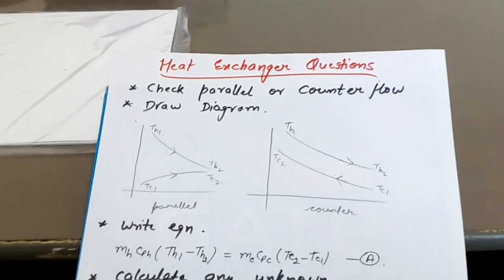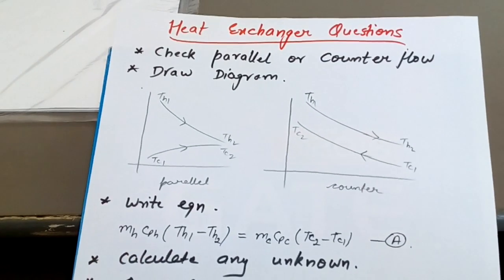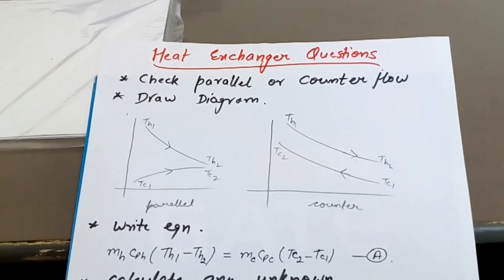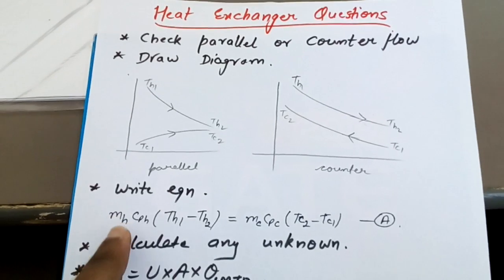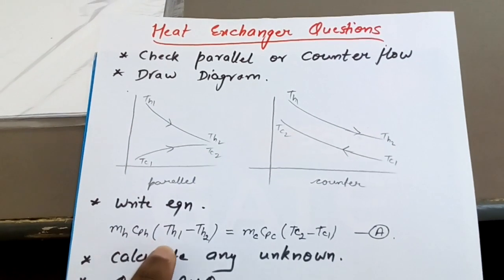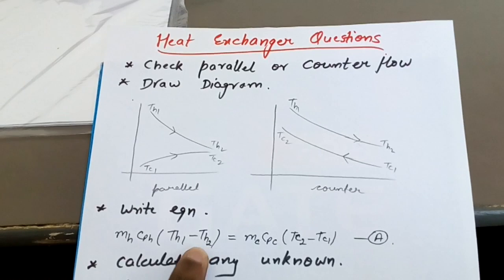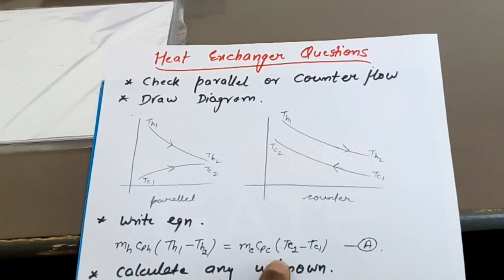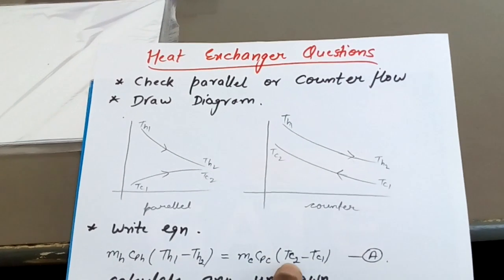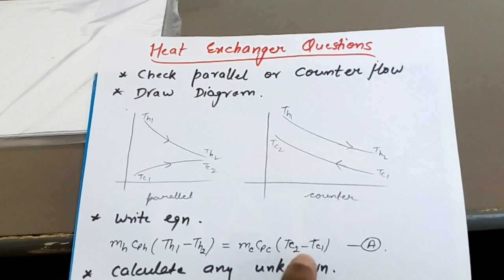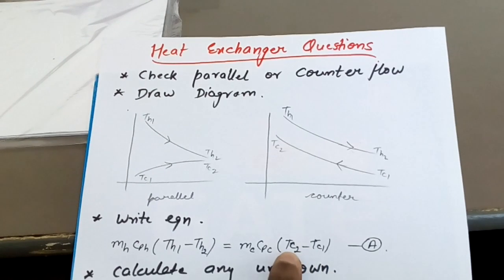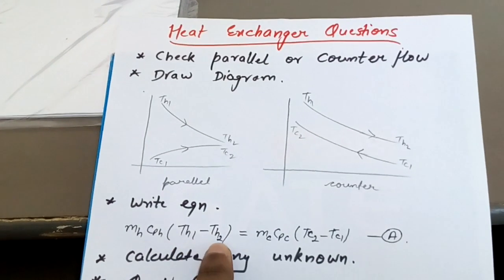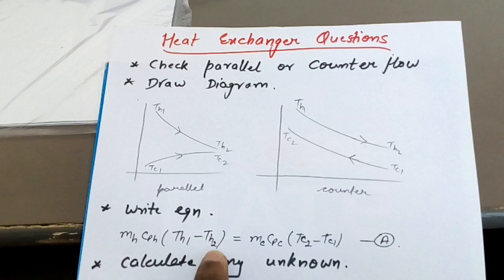After drawing the diagram, you have to write the sensible heat equation. The transfer of heat is Q = mCpΔT. That is: mass of hot fluid × Cp of hot fluid × (TH1 − TH2) = mass of cold fluid × Cp of cold fluid × (TC2 − TC1). We write TC2 minus TC1 because TC2 is higher in magnitude than TC1, and TH1 minus TH2 because TH1 is higher in magnitude than TH2.